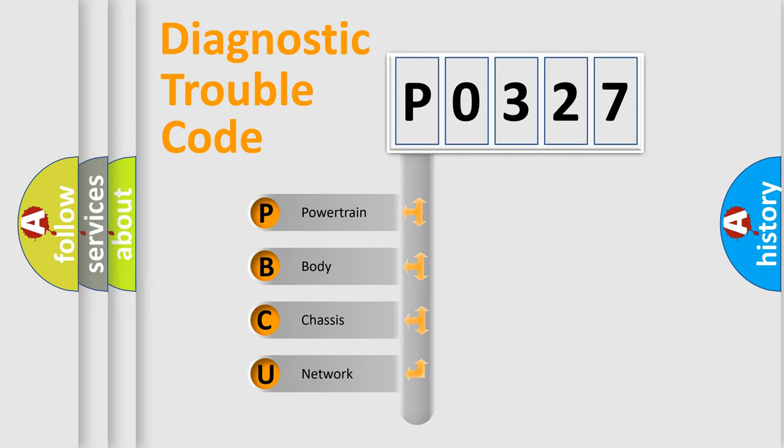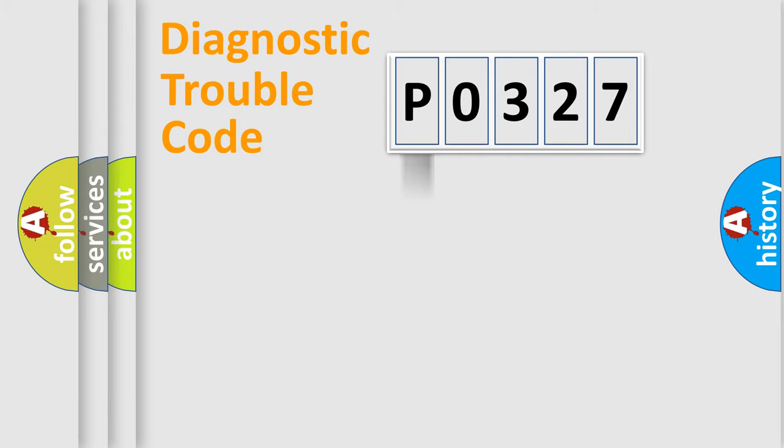We divide the electric system of automobile into four basic units: Powertrain, Body, Chassis, Network. This distribution is defined in the first character code.